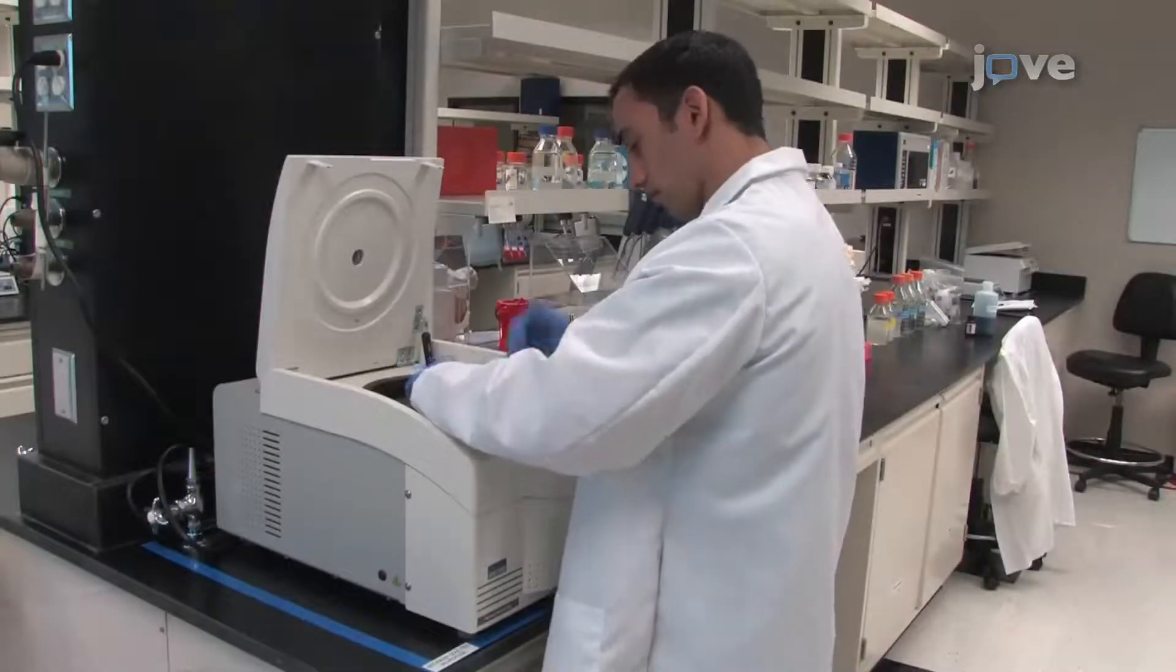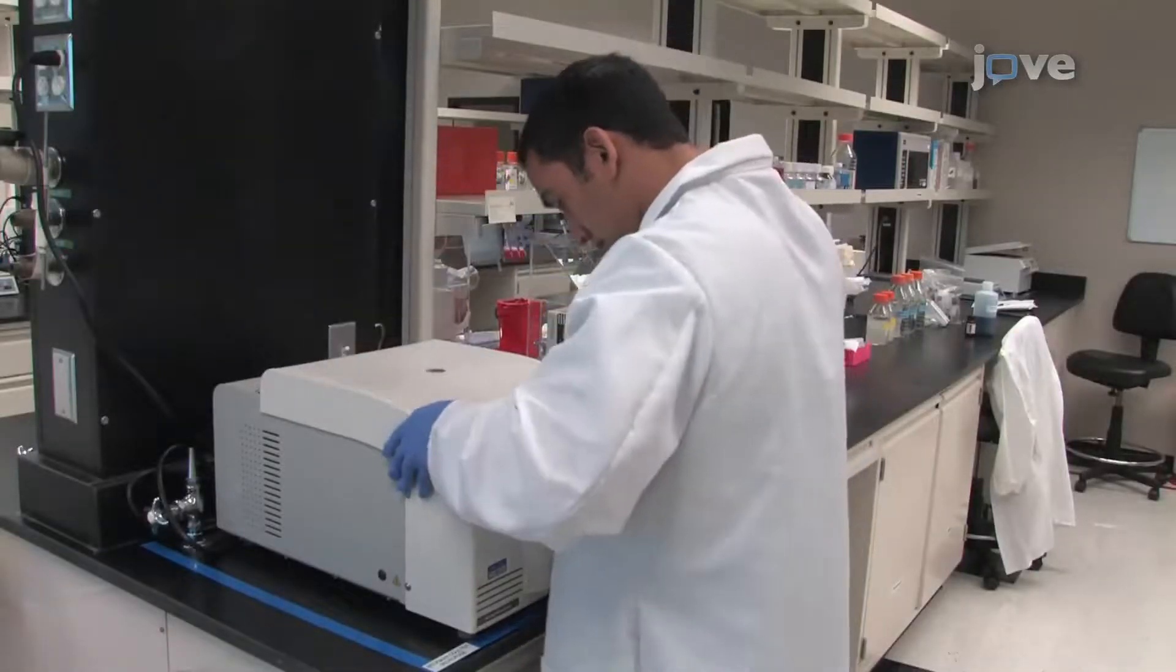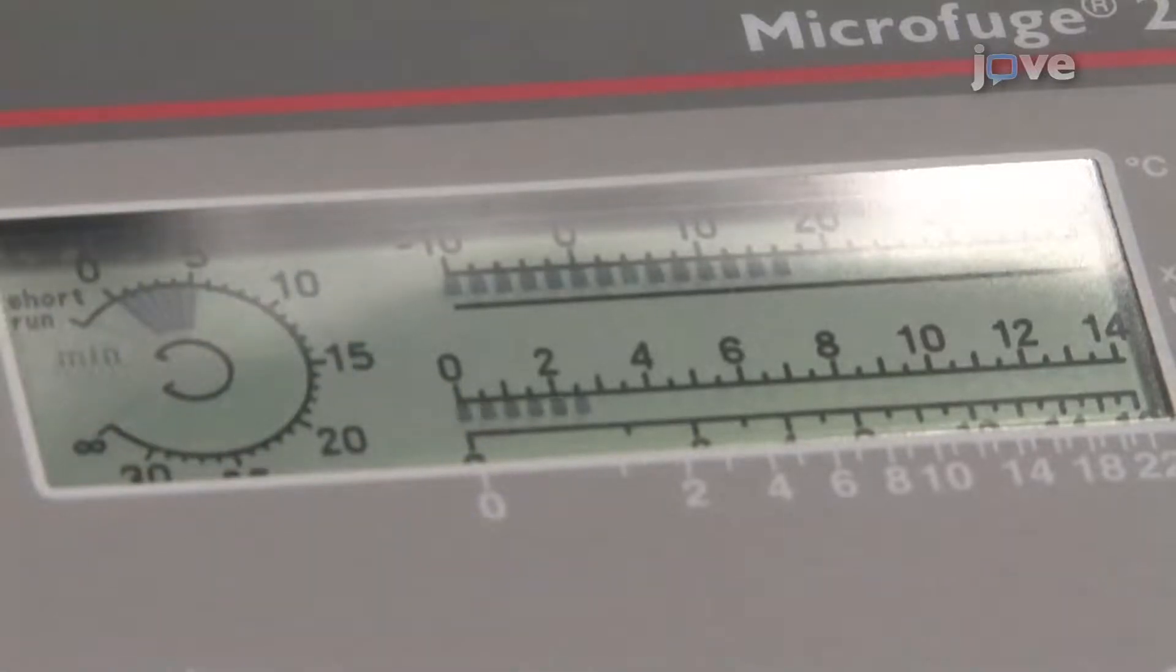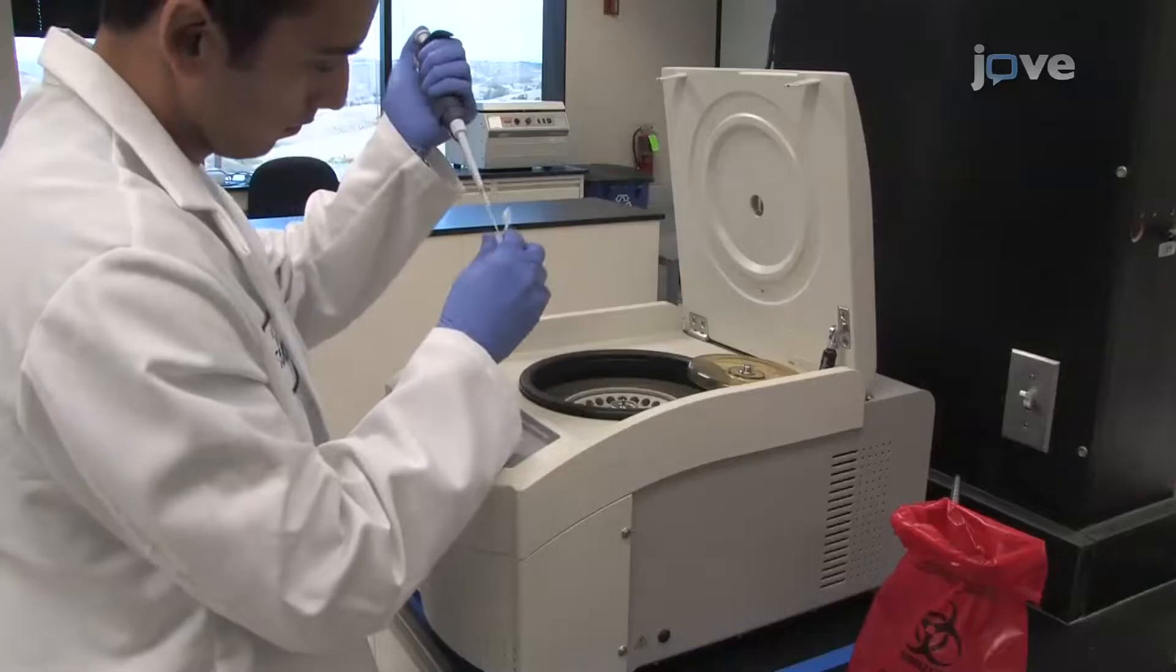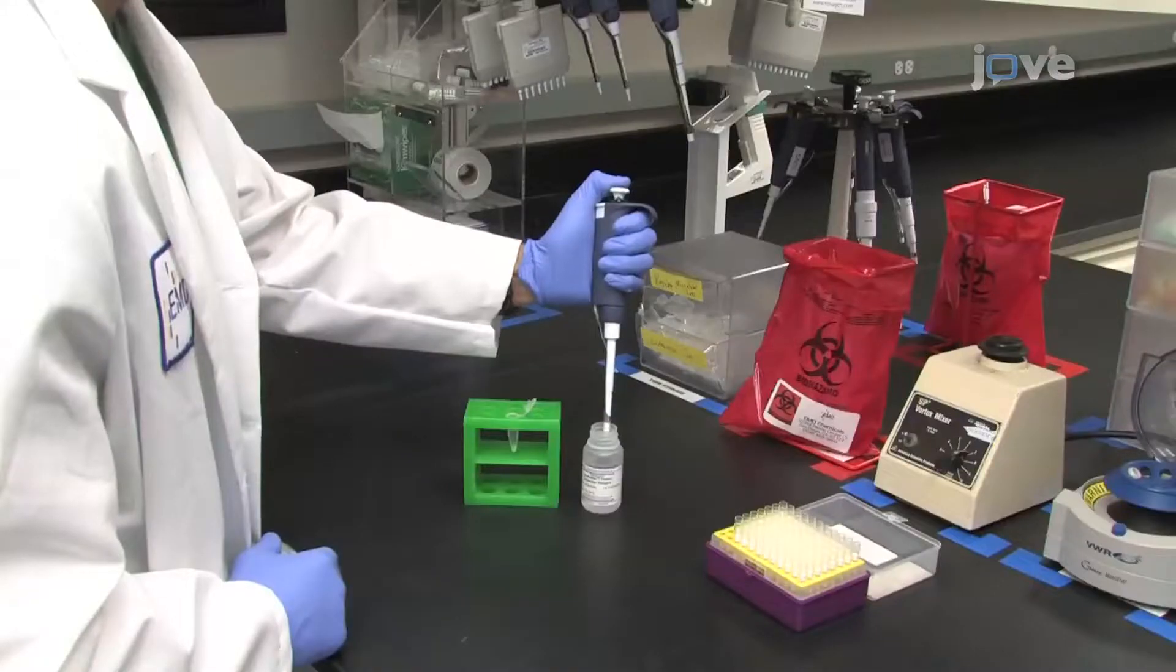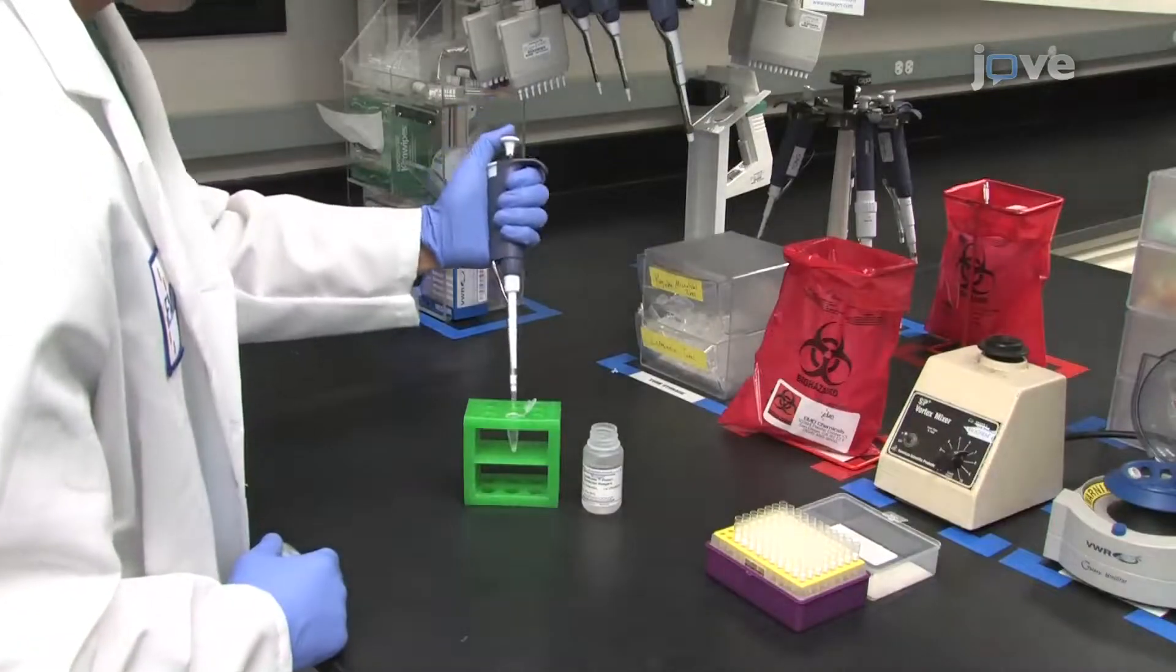The first step in Western blotting is sample preparation. Begin sample preparation by pelleting the cells using low-speed centrifugation, such as five minutes at 2500 times gravity. Following centrifugation, drain the cell pellets well. Resuspend the cells in CytoBuster Protein Extraction Reagent using 150 microliters per 10 to the 6 cells.